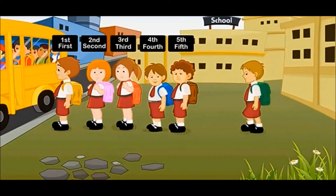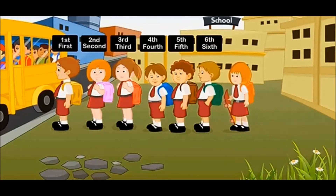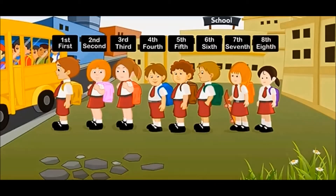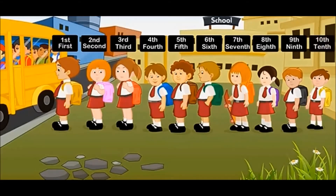The boy with green bag is in the sixth position. The girl with orange bag is in the seventh position. The girl with purple bag is in the eighth position. The boy with black bag is in the 9th position. The boy with yellow bag is in the 10th position.